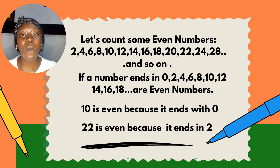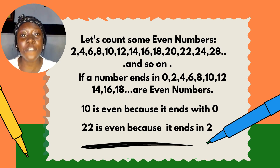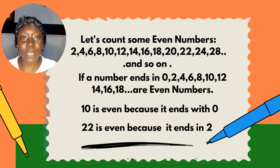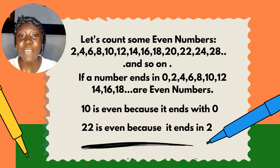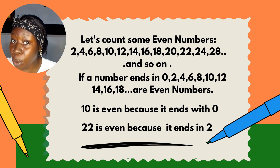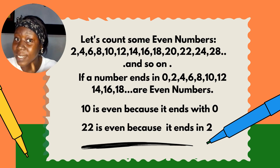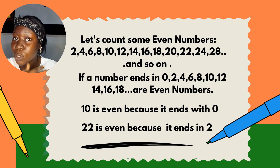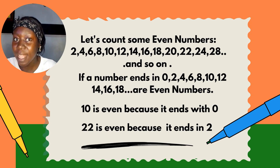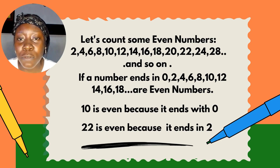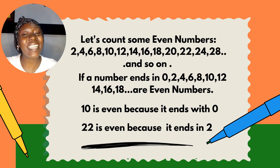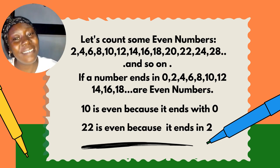We have two, four, six, eight, ten, twelve, fourteen, sixteen, eighteen, twenty, twenty-two, twenty-four, twenty-eight and so on. If a number ends in zero, two, four, six, or eight, they are called even numbers because they can be divided by two without any remainder.